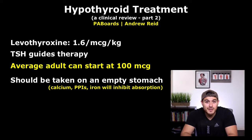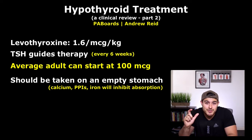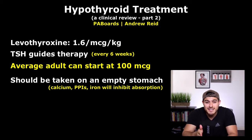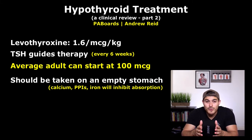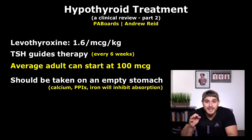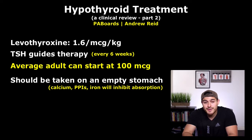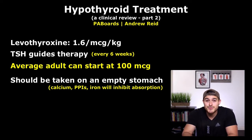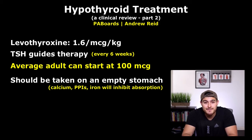After starting the medication, we recheck TSH levels. Although patients may start to feel better after a couple of weeks, it takes about six weeks for TSH levels to change on laboratory examination. Symptoms improve after two to three weeks, but we can't base management on symptoms alone. If TSH remains high, increase the dose and recheck at six weeks. Do not check TSH at two to three weeks just because the patient feels fine.